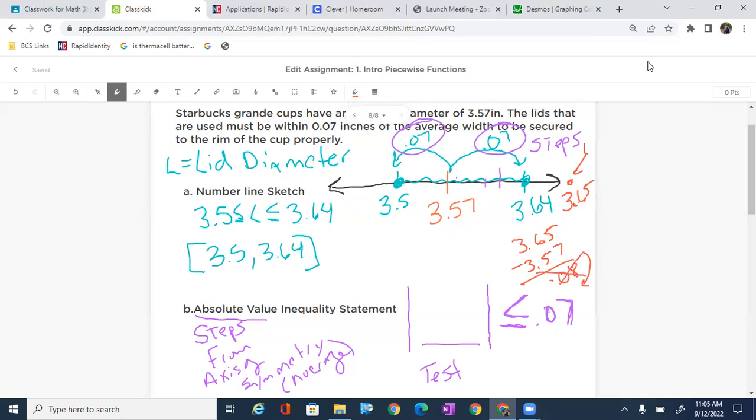Well, what did we do? We took a random lid and we subtracted the 3.57. And that's how we build that. So remember, absolute value looks for the steps. And then from there, we're going to subtract off the average from any lid to see if it fits within that. That's our test.